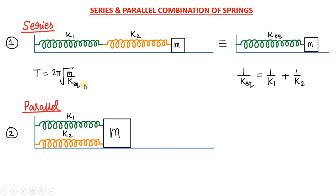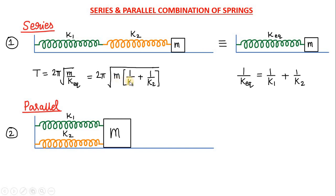Where k is only one spring, because only one spring k equivalent is connected to this block m. So we can write the formula 2 pi root m upon k equivalent. Then from here we can substitute the value and we will get the answer as 2 pi root of m multiplied by 1 by k1 plus 1 by k2. So m divided by k equivalent means m multiplied with 1 by k equivalent, and 1 by k equivalent is 1 by k1 plus 1 by k2 gets multiplied to m. In this way we will find out the time period of oscillation for series combination.